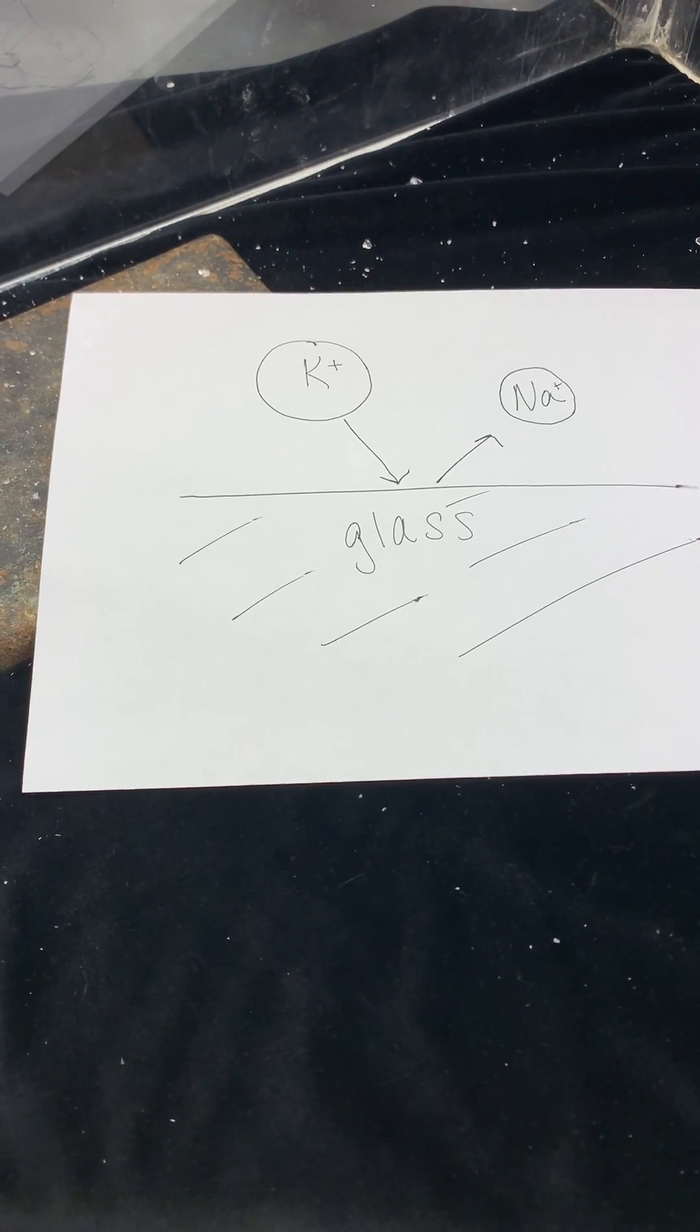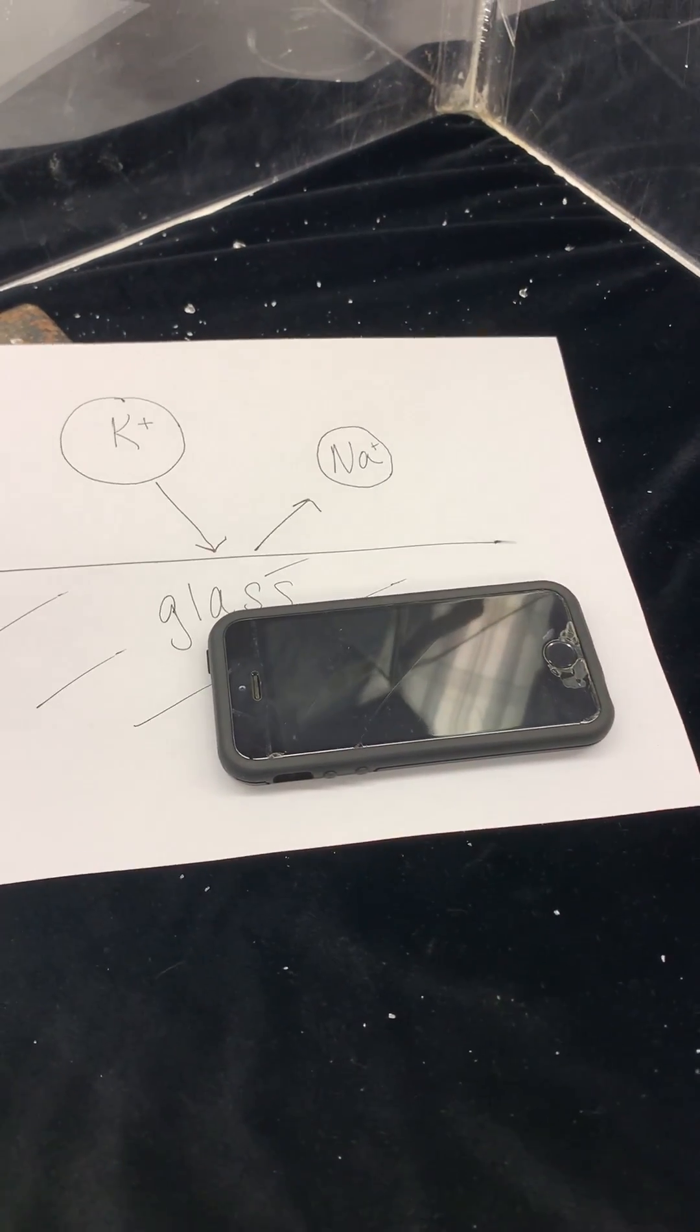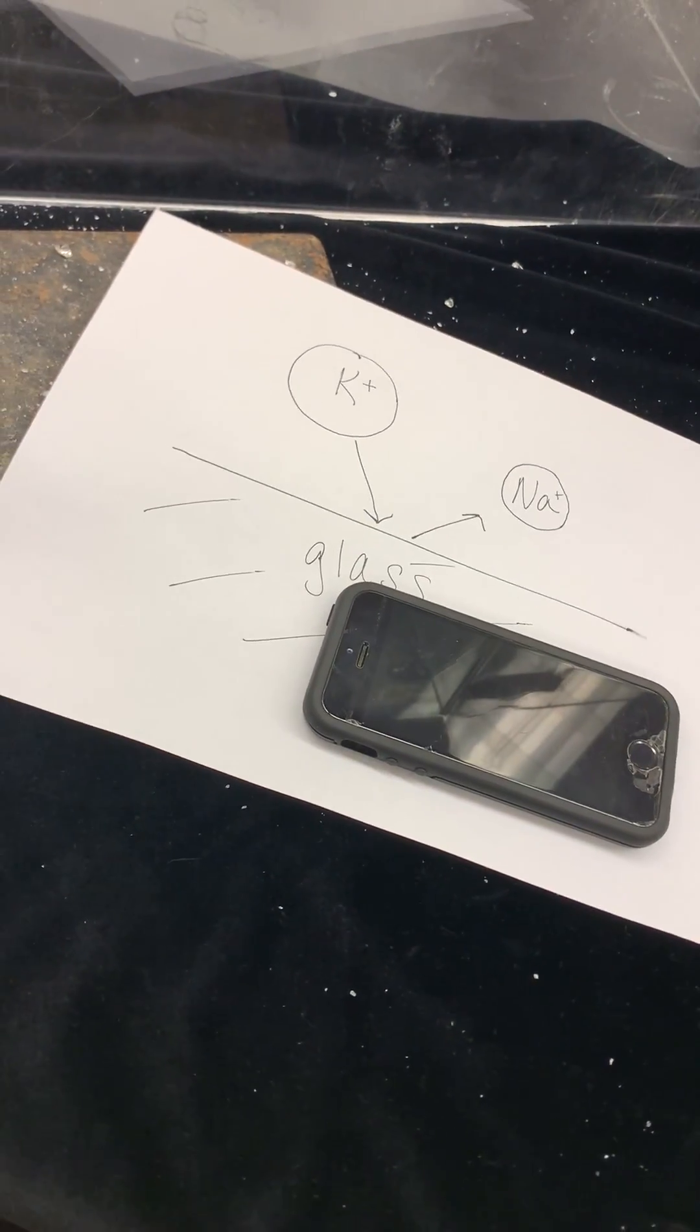This can also be applied to something we all know and love, our cell phones. The compressive layer from the Gorilla Glass helps to keep your phone screen from shattering upon collision, which is something that we could all benefit from.